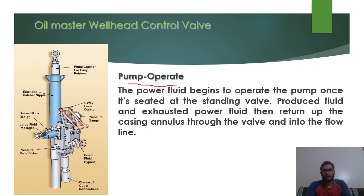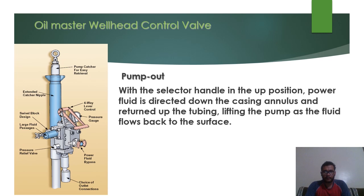The second condition is Pump Operate. In this condition our pump is in operating condition. Once the power fluid begins to operate the pump, after settling of your downhole pump on the standing valve, the produced fluid and exhaust power fluid will return to the casing through a valve and flow into the flow line to the surface. The third condition is Pump-Out. If you want to retrieve the pump, reverse circulation will bring the pump to the surface. Here we are pumping fluid from the casing and circulating it out from the tubing.